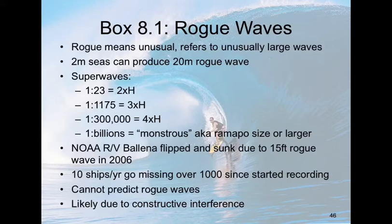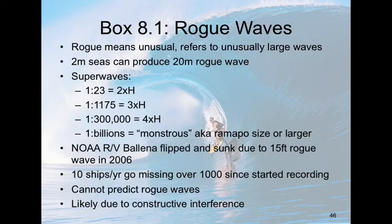One in every 23 waves is going to be twice the average height. One in every 1,100 or so is going to be three times the average height. And then from there, one in billions of waves would be monstrous — like the Ramapo at 34 meters or higher. Billions seems like a large number, but remember, there are billions of waves all the time on the ocean. The ocean's a big place with lots of waves.